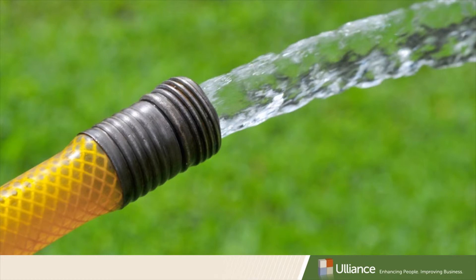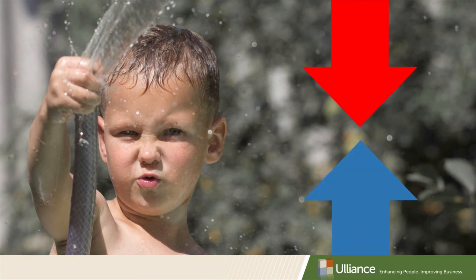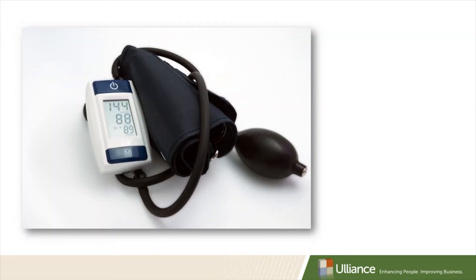If your arteries are open, the water is going to flow very nicely. But as soon as you put your finger over that hose, what happens? Resistance. If resistance is there, the force and the resistance will create a higher pressure. That's how those numbers are associated with blood pressure.